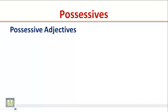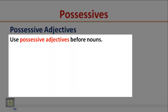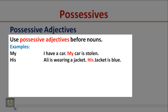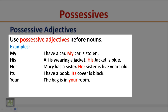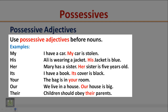Possessive adjectives: use possessive adjectives before nouns. Examples: I have a car — my car is stolen. Ali is wearing a jacket — his jacket is blue. Mary has a sister — her sister is five years old. I have a book — its cover is black. The bag is in your room. We live in a house — our house is big. Children should obey their parents. Notice that possessive adjectives come before nouns.